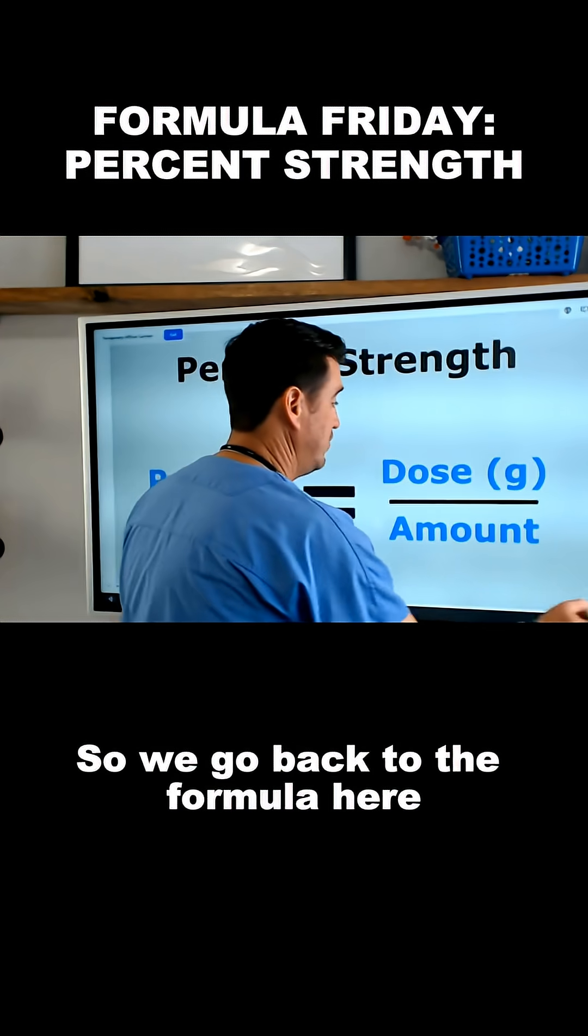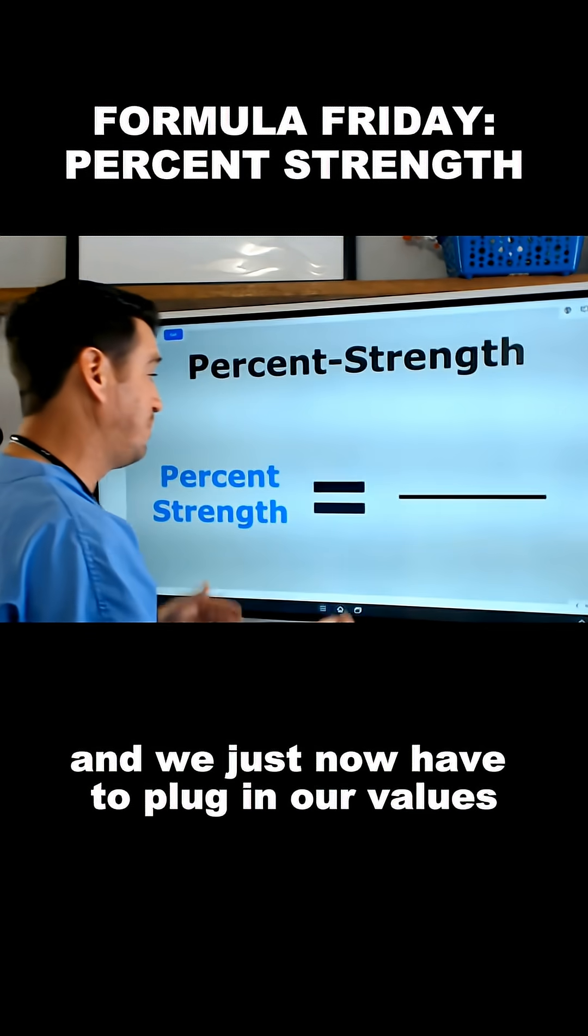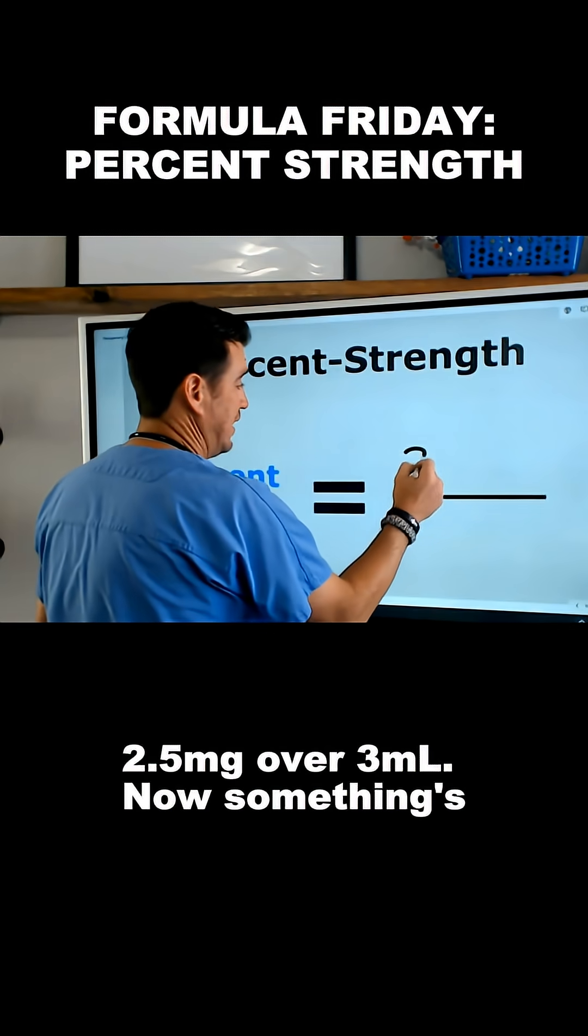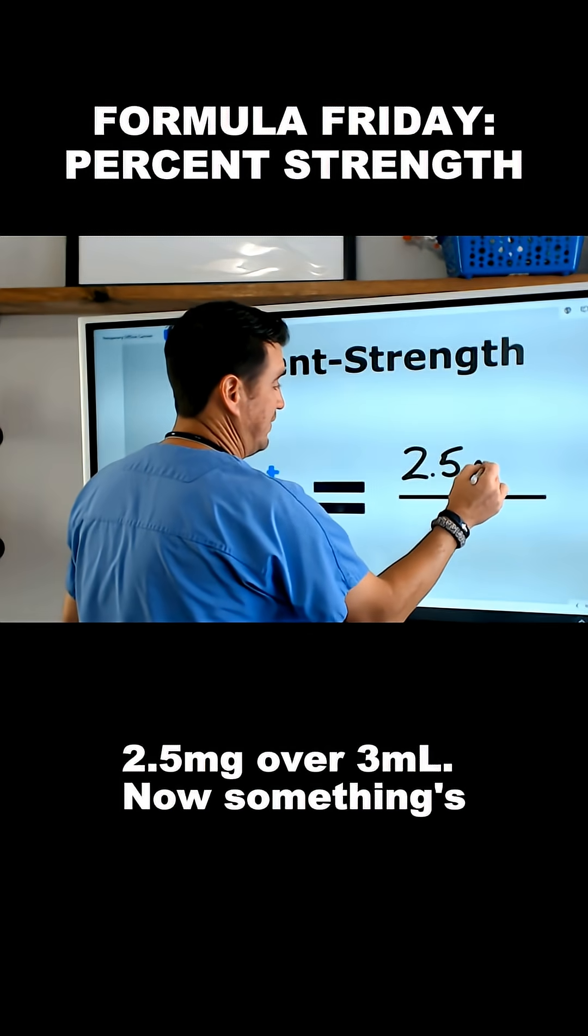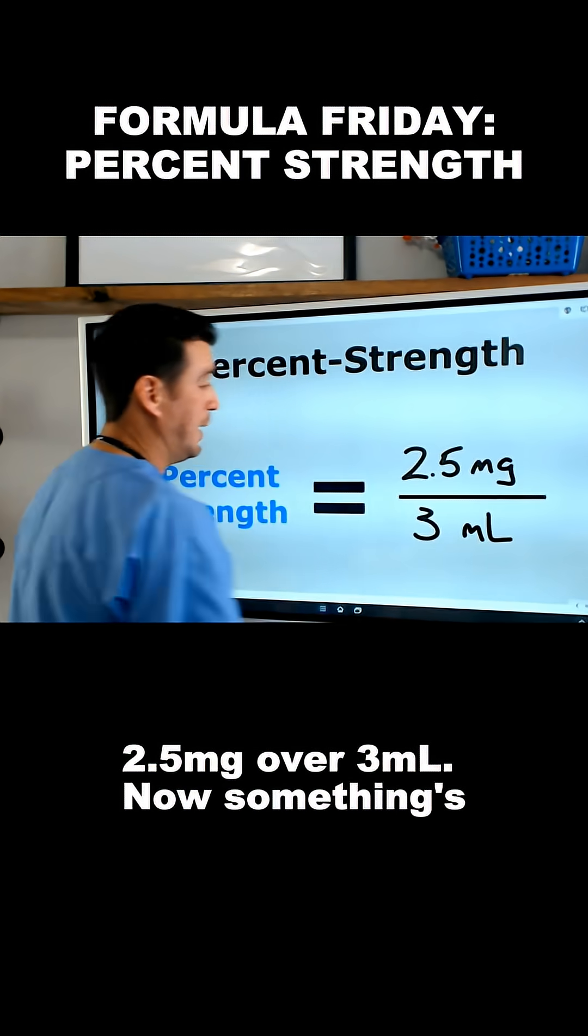So we go back to the formula here. We know the formula and we just now have to plug in our values. 2.5 milligrams over 3 milliliters.